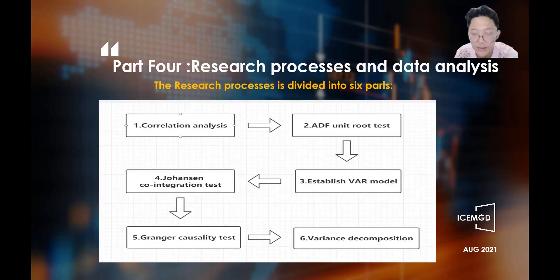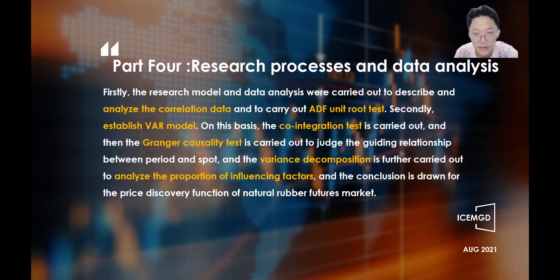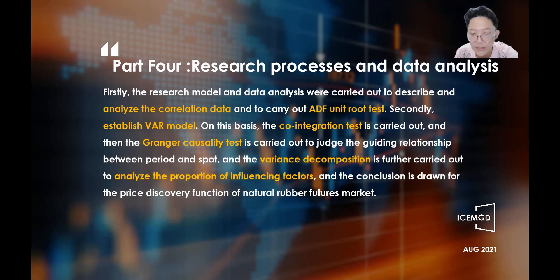The fourth part is the research process and data analysis, which is divided into six parts: correlation analysis, ADF unit-root test, establishing the VAR model, Johansen cointegration test, Granger causality test, and variance decomposition. The correlation data was described and analyzed, centering on the futures price, spot price, and basis trend of natural rubber, so as to gain a basic understanding of the futures and spot market status. The ADF unit-root test was then carried out. On this basis, the Johansen cointegration test was performed, followed by the Granger causality test to judge the guiding relationship between futures and spot. Finally, variance decomposition was carried out, the proportion of influencing factors was analyzed, and conclusions were drawn for the price discovery function of the natural rubber futures market.